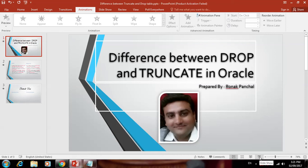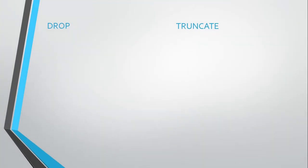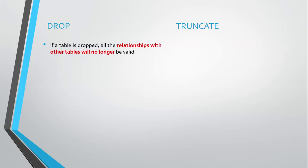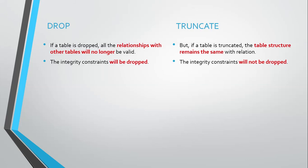Hello friends, today let's see the difference between DROP and TRUNCATE in Oracle. First of all, if a table is dropped, all the relationships with other tables will no longer be valid. But if a table is truncated, the table structure remains the same with the relations. The integrity constraints will be dropped in DROP.